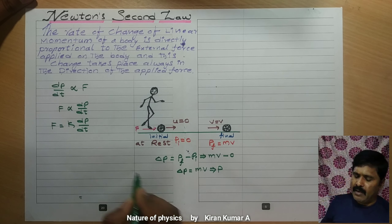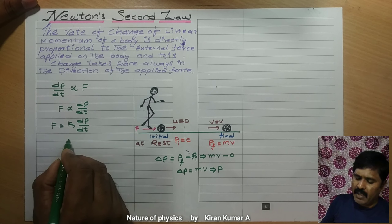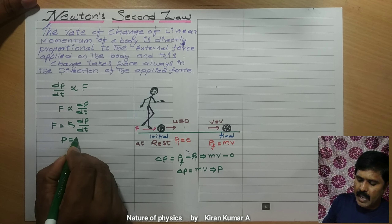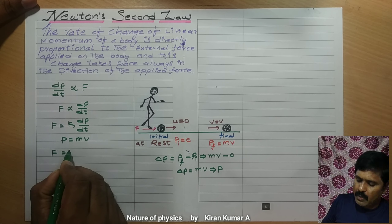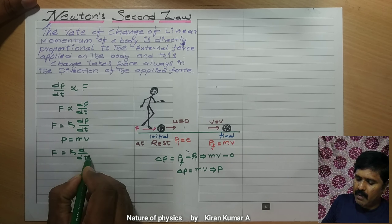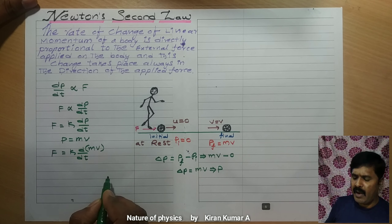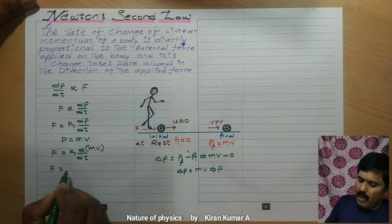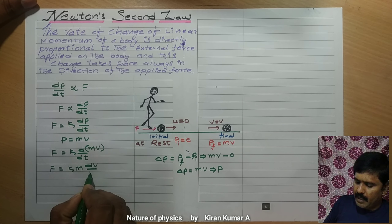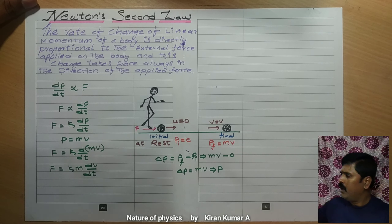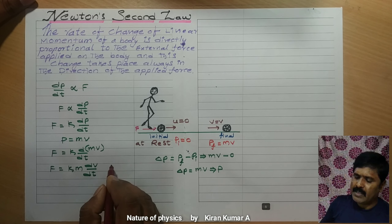So F is equal to k times dP/dt, in which P is equal to mV. Therefore F is equal to k times d/dt of mV, replacing the P value. And continuing, F is equal to k times m times dv/dt.